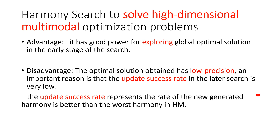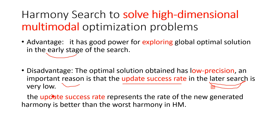It has good power for exploring the global optimal solution in the early stage of the search, but the optimal solution obtained has low precision. An important reason is that the update success rate in the later search is very low. The update success rate represents the rate at which the newly generated harmony x-new is better than the worst harmony x-worst in each iteration.